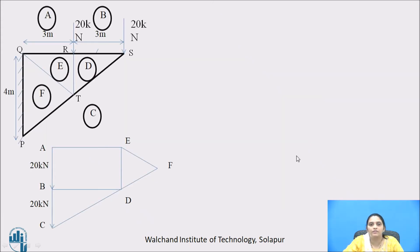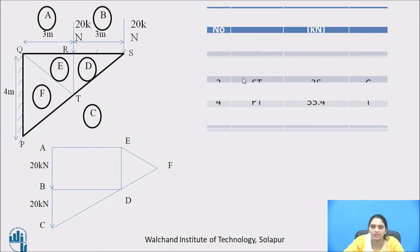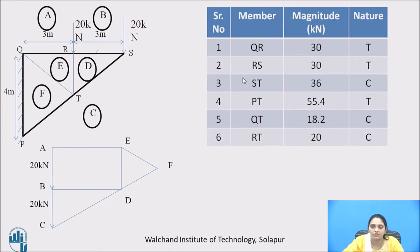This is the space diagram and this is the vector diagram. Complete the table showing the magnitude and the nature of all the members. Now let us see how to determine the nature of the force.